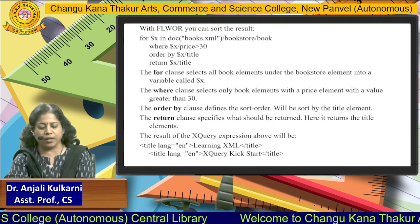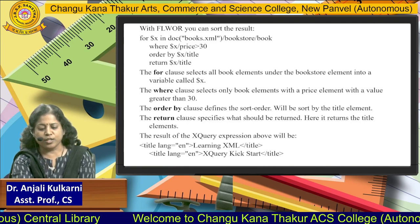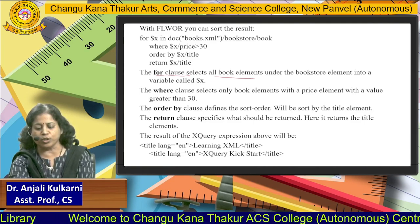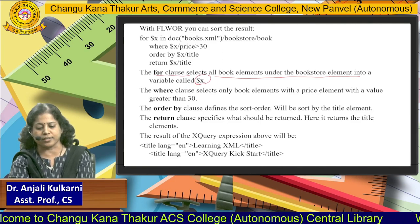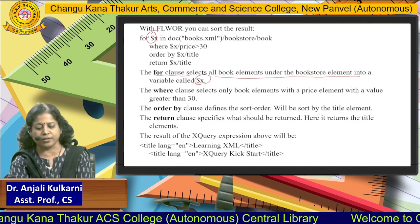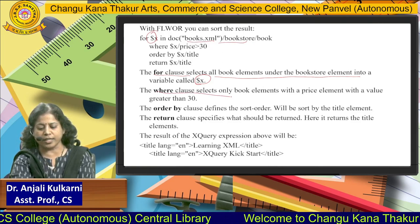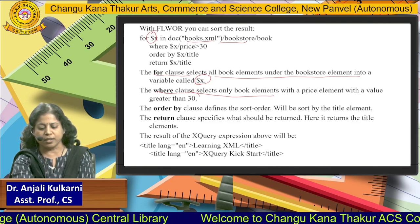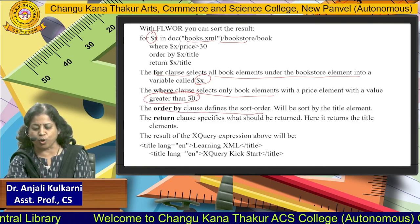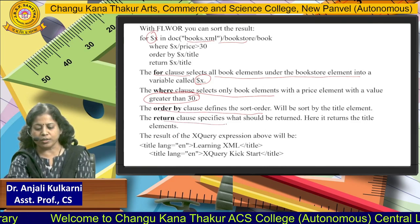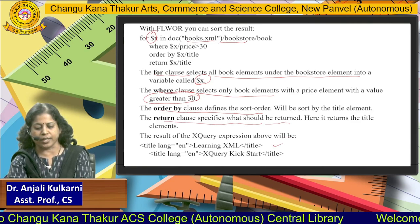With the FLWR expression again, the 'for' clause selects all book elements under the bookstore element into the variable $x. The 'where' clause selects only book elements with a price value greater than 30. 'Order by' defines the sorting order. The 'return' clause specifies what to return. The output is the XQuery expression result.